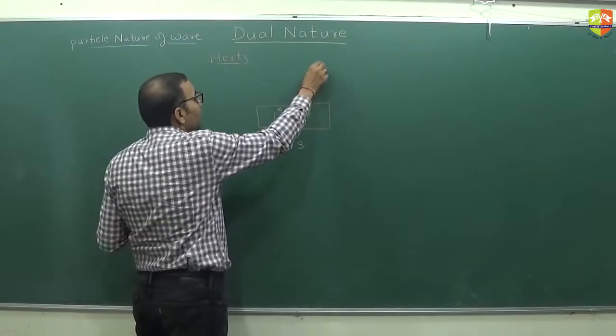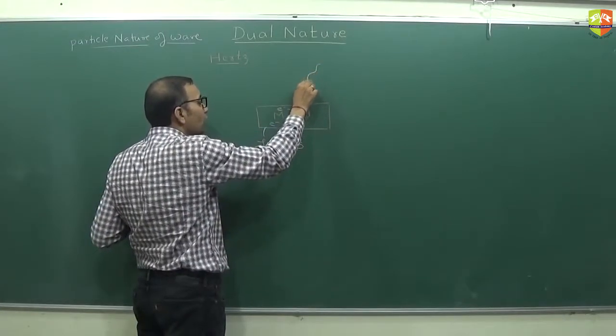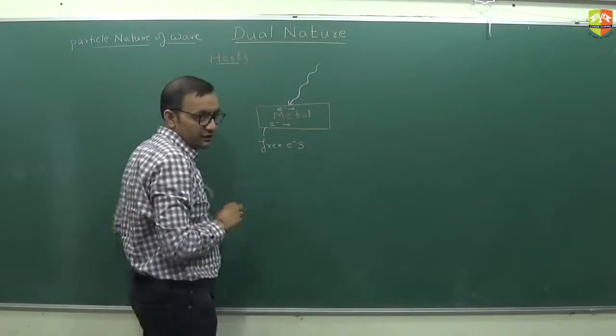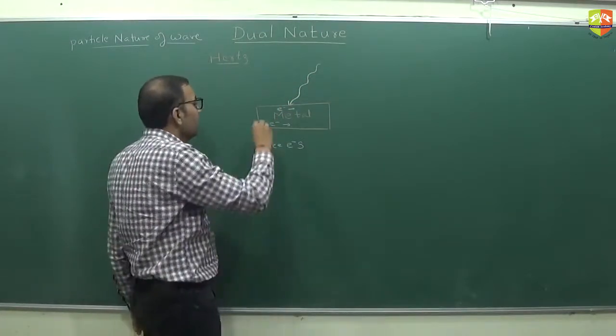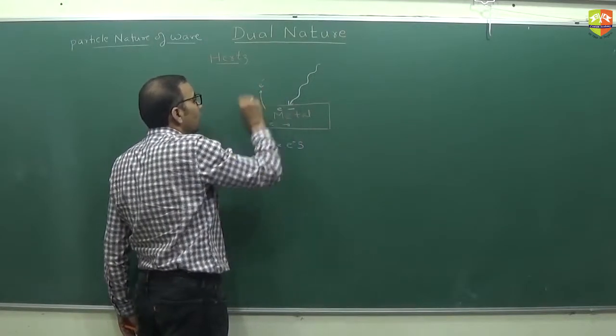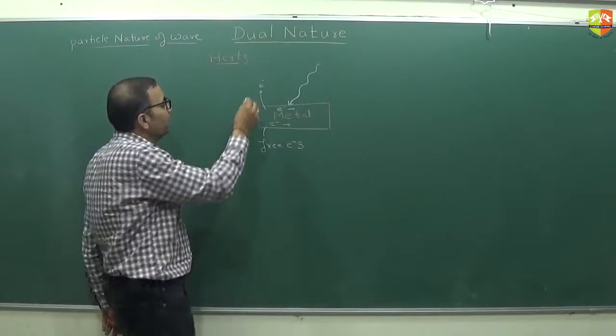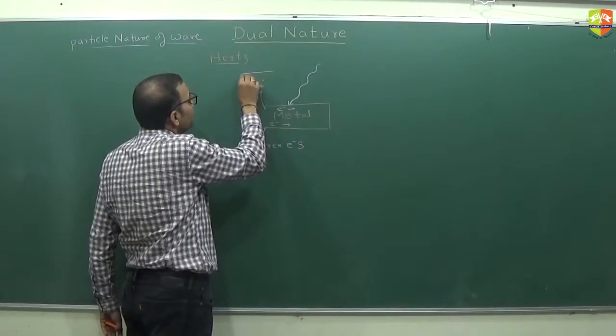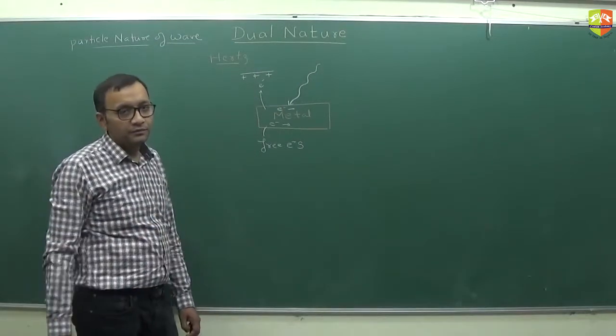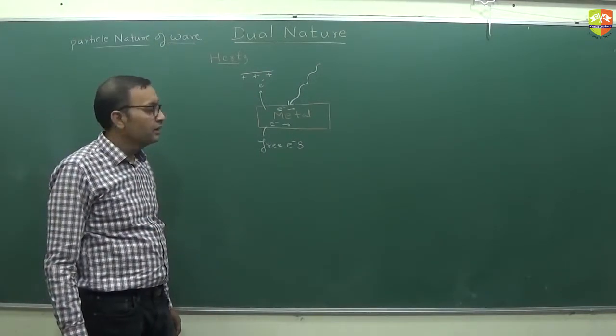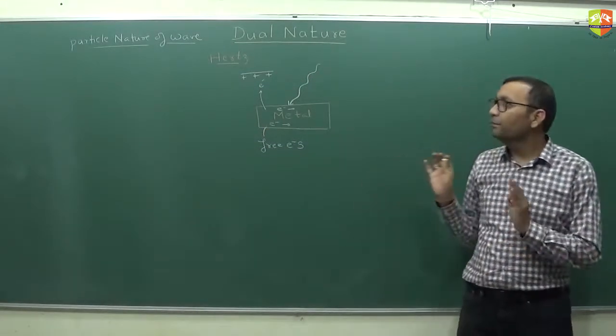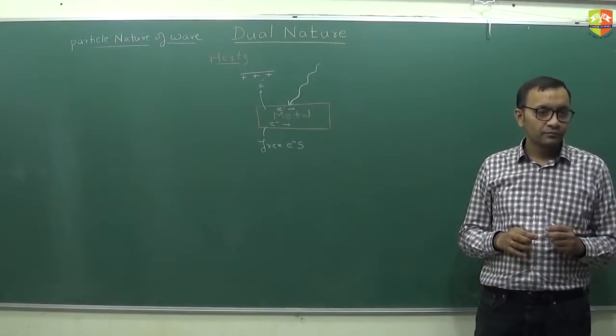What Hertz has observed is that if you fall a radiation on the metal surface, then few electrons will be able to come out. And you can probably capture it if you put a positively charged plate above it. So this is like the beginning of understanding towards the particle nature of the wave.